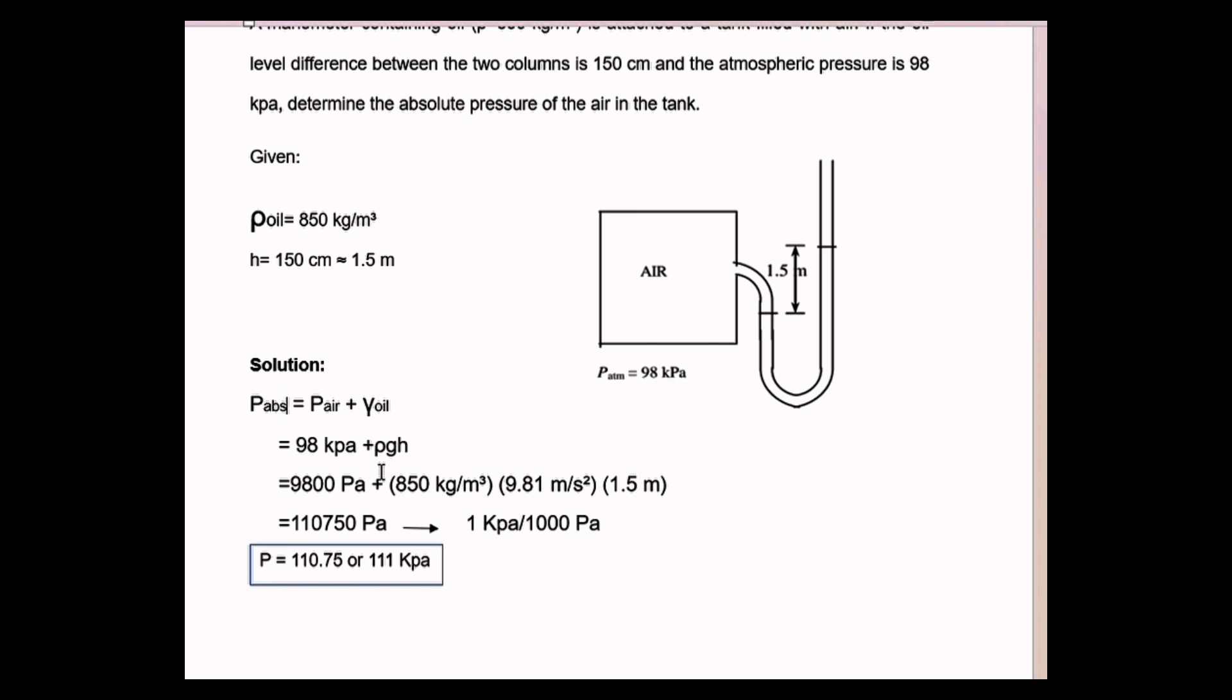98 kPa can be written as 9800 Pa plus the density which is 850 multiplied by the acceleration due to gravity which is 9.81 m/s² and the height of 1.5 m.